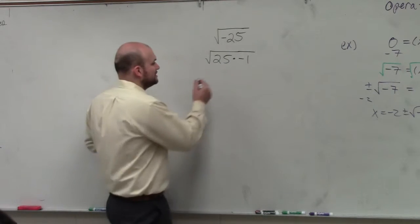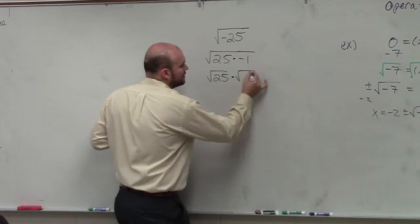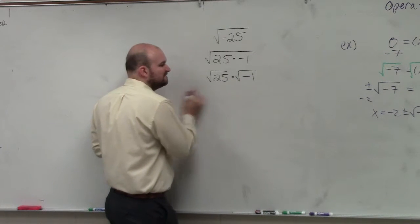But since these are separated by multiplication, I can do the square root of 25 times the square root of negative 1. So what's the square root of 25? 5.